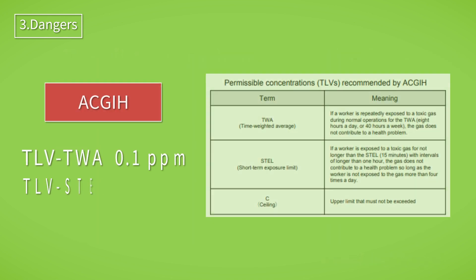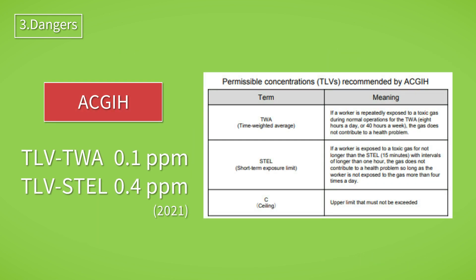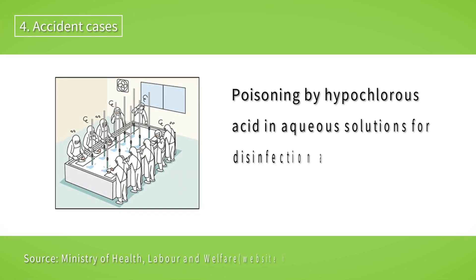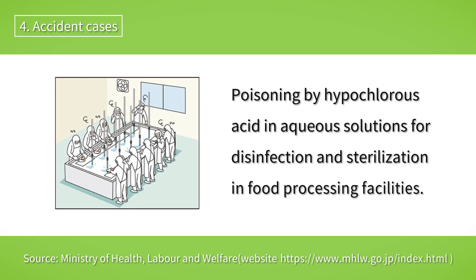Permissible concentrations are specified for gases harmful to the human body. In the case of chlorine, the TLV-TWA and TLV-STEL are specified at very low concentrations of 0.1 ppm and 0.4 ppm respectively.